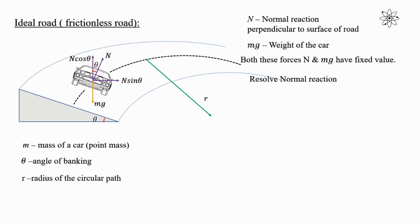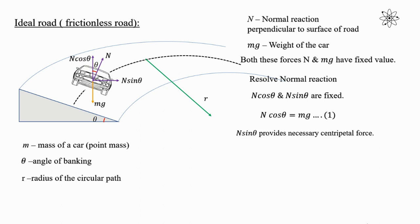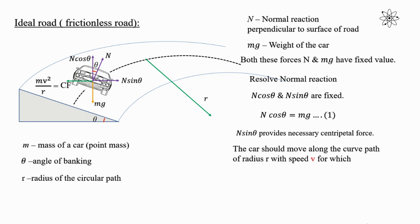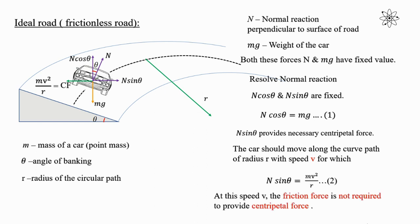For a given banked road, the angle of banking is fixed, so both components N cos theta and N sin theta of the normal reaction are also fixed. The vertical component N cos theta balances the weight of the car: N cos theta = mg — equation (1). The horizontal component N sin theta is directed towards the center of the curved path, hence N sin theta provides the necessary centripetal force: N sin theta = mv²/r — equation (2). At this speed v, friction force is not required to provide centripetal force.